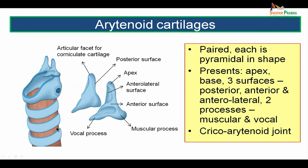The arytenoid cartilages are paired cartilages, each pyramidal in shape. It presents an apex, a base which rests on the cricoid lamina, and three surfaces — the posterior surface, the anterolateral surface and the anterior surface. It has two processes: a vocal process which is directed anteriorly and a muscular process. The cricoarytenoid joint, formed with the lamina of the cricoid cartilage, is a synovial type of joint which allows both gliding as well as rotatory movements.